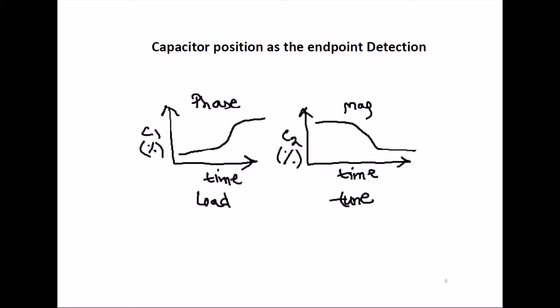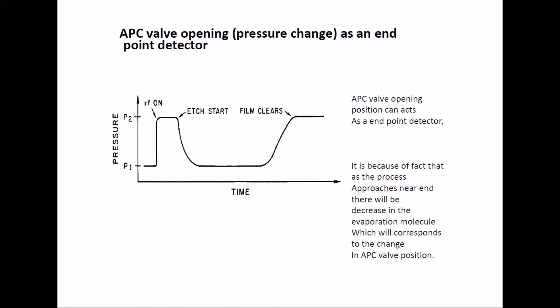There's one more: you can use your capacitor positions as an endpoint detection. These are the matching capacitors called phase and magnitude in Oxford systems, load and tune in other systems. With time, C1 and C2 will change positions, for example during etching, because they have to match constantly and the plasma condition is changing. They will change from position A to B where your etching products are more and more developing, and at endpoint it develops some stable phase. The magnitude capacitor does the same way.